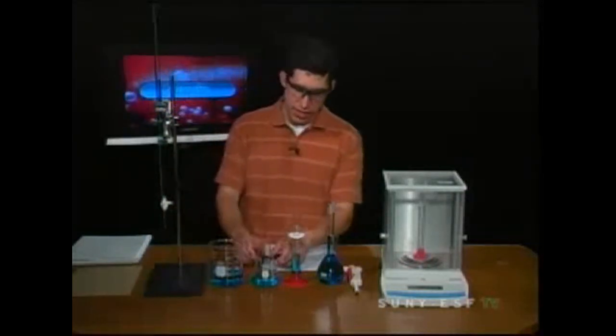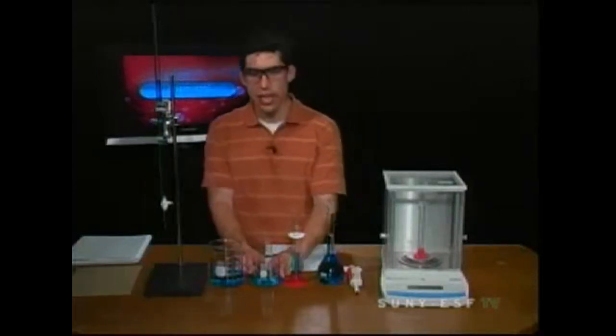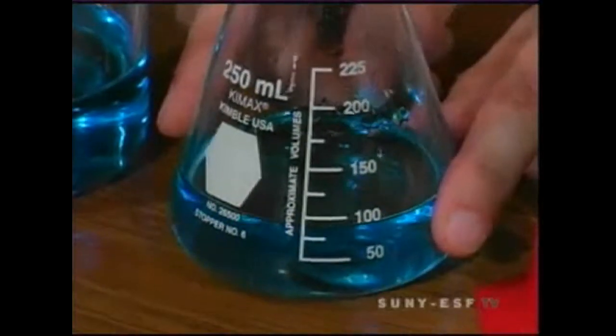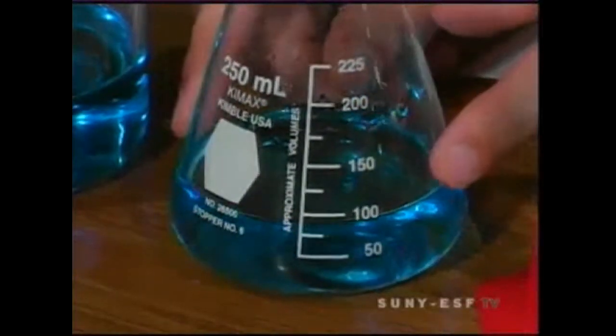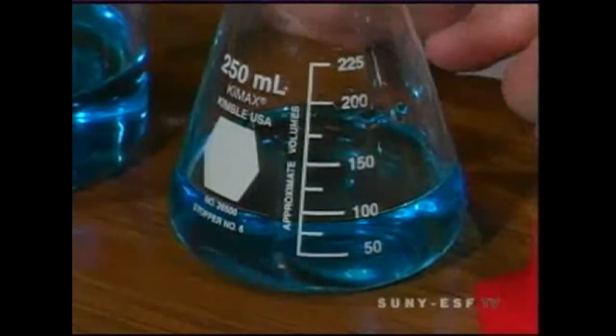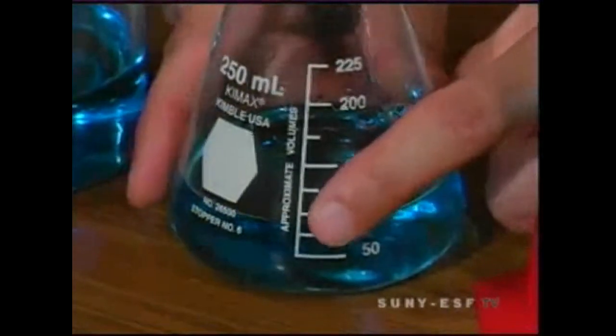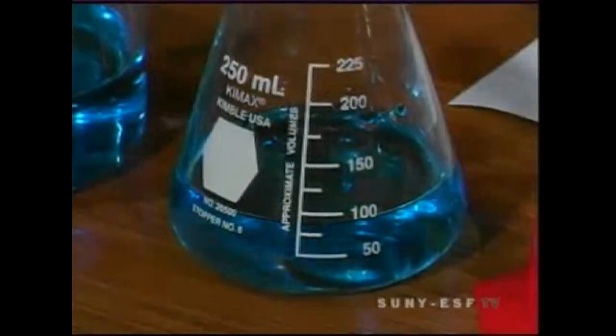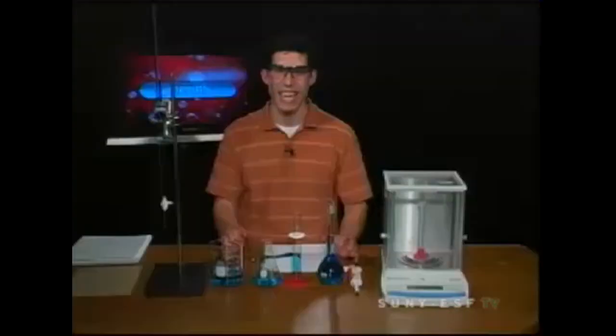The next item on the list that we use for measuring volumes is the Erlenmeyer flask. The Erlenmeyer flask is also relatively accurate. I have about 100 milliliters of solution in here. But again, we can see because it says approximate volume that this is not going to be something that you're going to use for exact measurements.